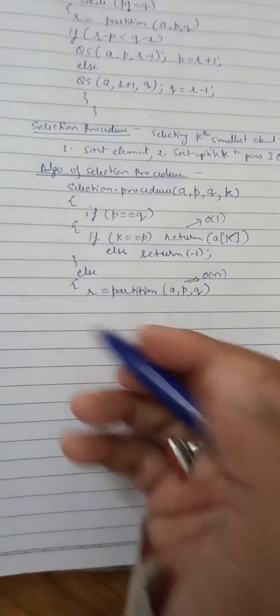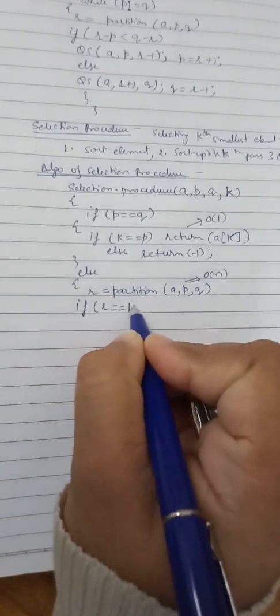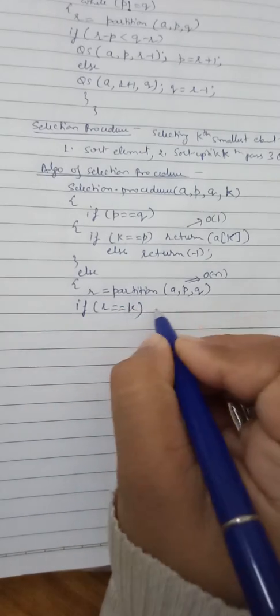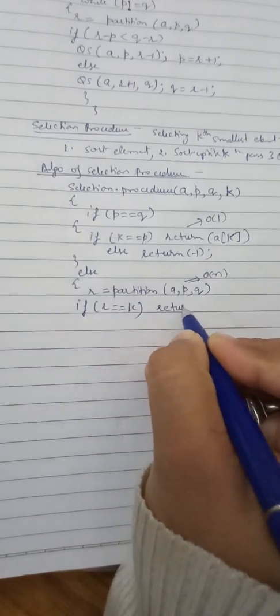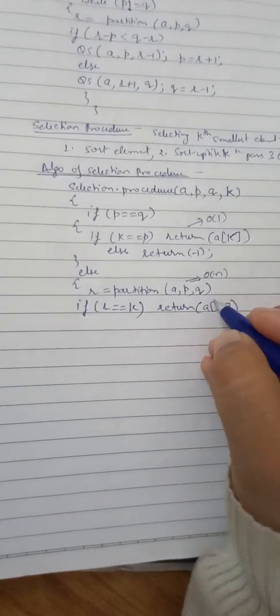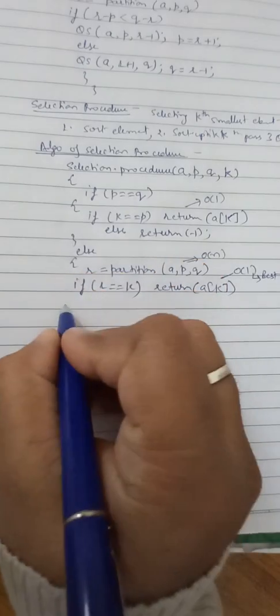If r equals k after the partition, it means the partition pivot is exactly at position k — that is the smallest element we are looking for — so we return a[k] in O(1). This is the best case, where we find the element directly from the partition.